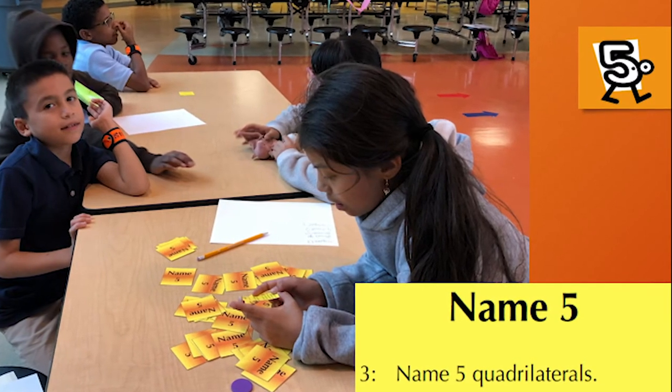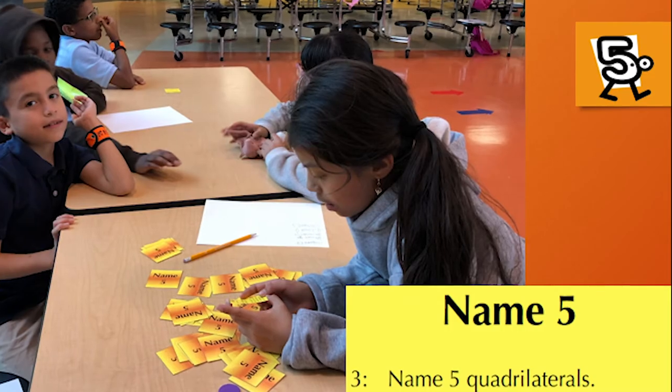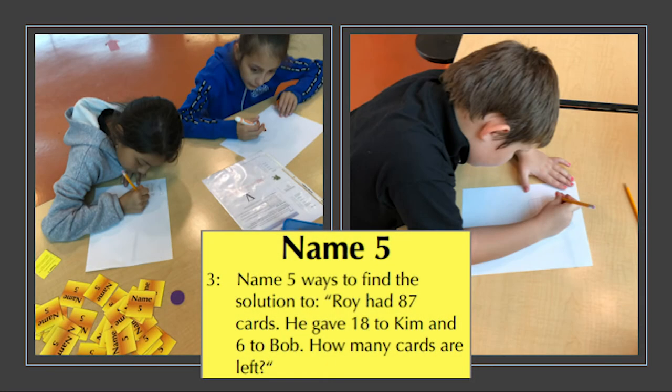The team will flip over a Name 5 card and read aloud the category for their appropriate grade level. With their team members, both teams have 2 minutes to generate 5 answers that fit the category.